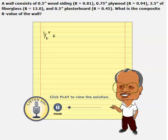1/2-inch wood siding, and its R value is given as 0.81.